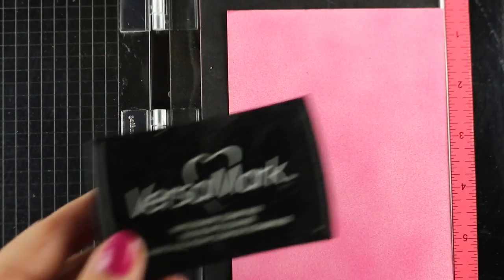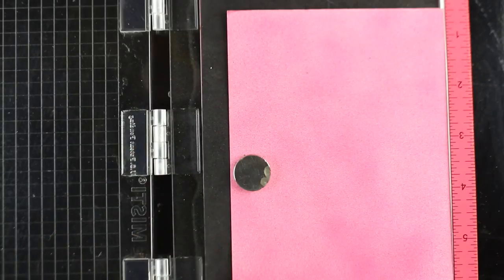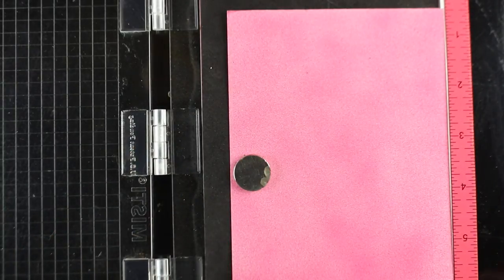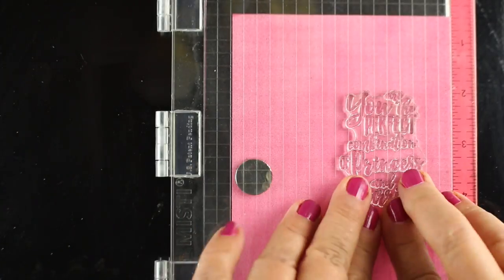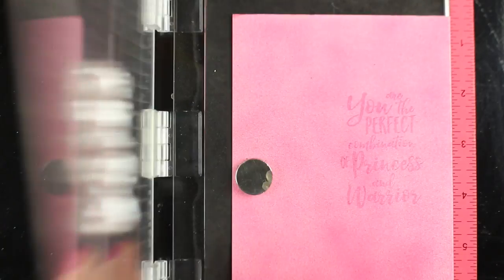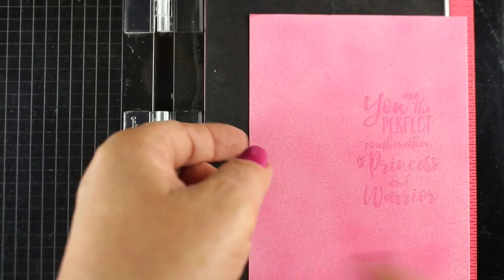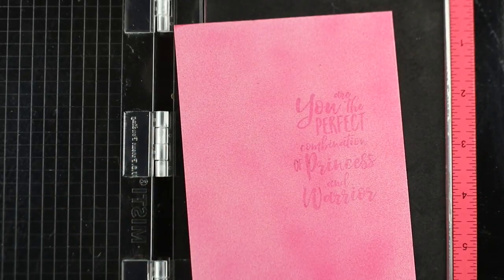But the embossing that I'm going to do on here is going to cover that anyway. So I put the messier side on the place where I'm going to stamp. Well, actually the right hand side is the better side. So I'm going to stamp first my sentiment and that one I'm going to emboss in white.